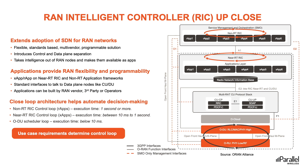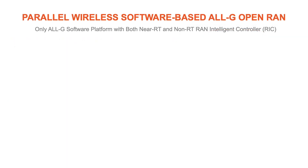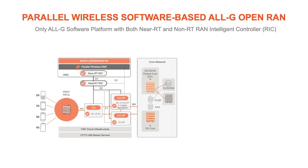These control loops are defined based on the controlling entity and can run in parallel. At Parallel Wireless, we believe the RIC puts mobile operators in the driver's seat by helping them reduce infrastructure and operational costs, improve network performance, and increase business agility. It also helps operators build new revenue streams with personalized services such as network slicing and indoor location tracking capability.